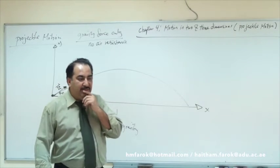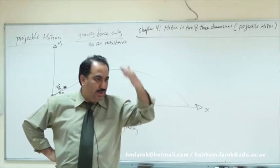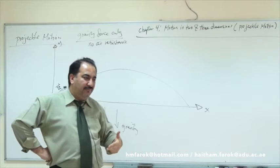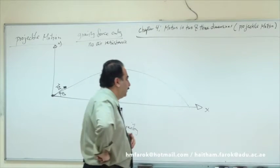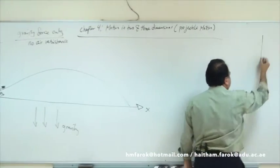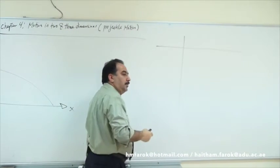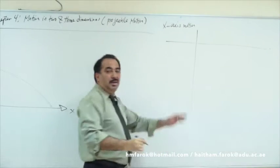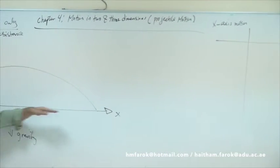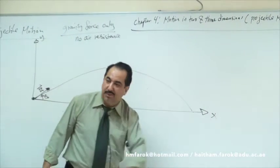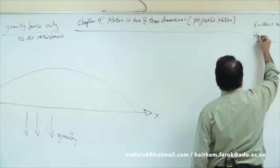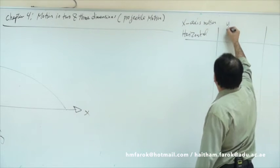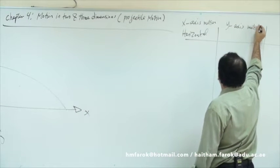If you remember the previous lesson, whenever we have motion in space, we create a table: motion in X, motion in Y, and motion in R. Because here we don't have Z. The first column is X-axis motion, which we call horizontal motion — horizontal relative to the ground. The Y-axis motion we call vertical.